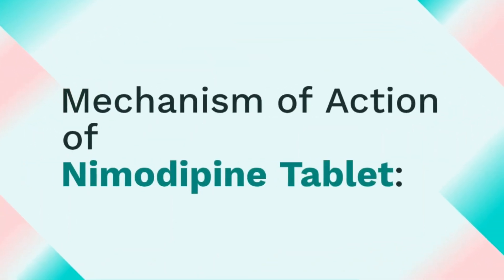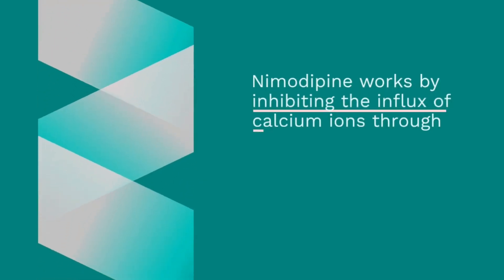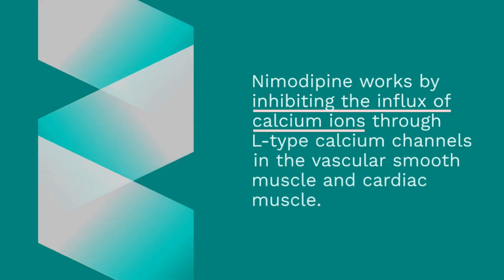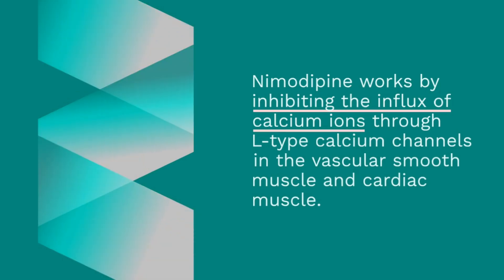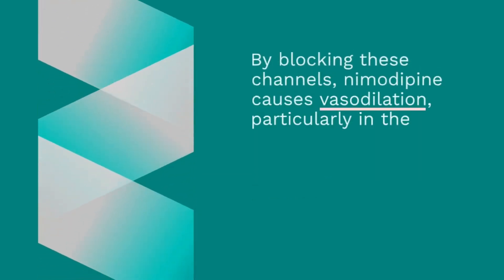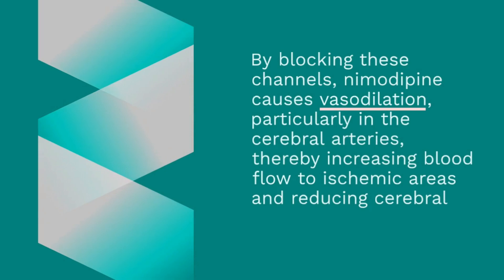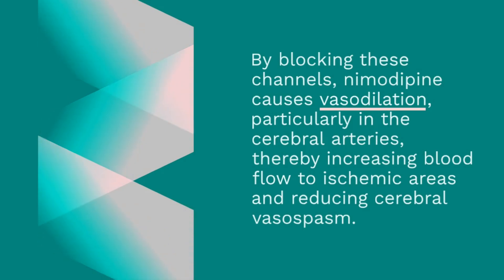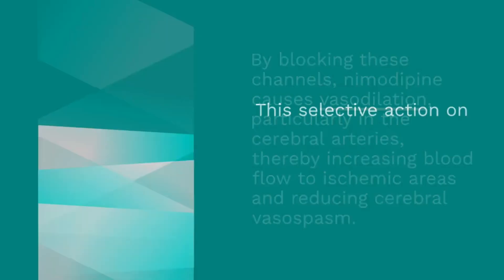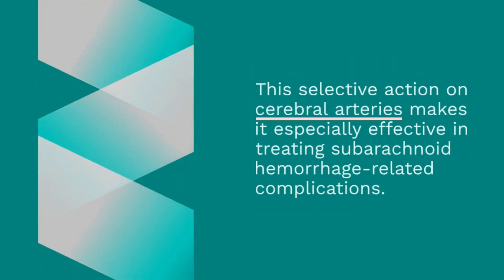Mechanism of action of nematopine tablet. Nematopine works by inhibiting the influx of calcium ions through L-type calcium channels in the vascular smooth muscle and cardiac muscle. By blocking these channels, nematopine causes vasodilation, particularly in the cerebral arteries, thereby increasing blood flow to ischemic areas and reducing cerebral vasospasm. This selective action on cerebral arteries makes it especially effective in treating subarachnoid hemorrhage-related complications.